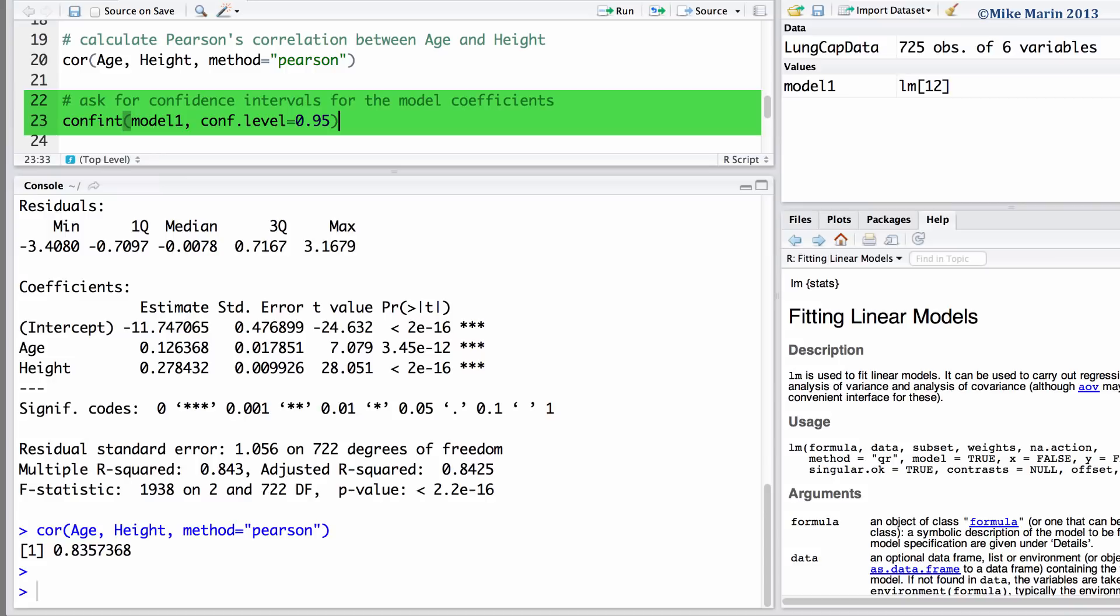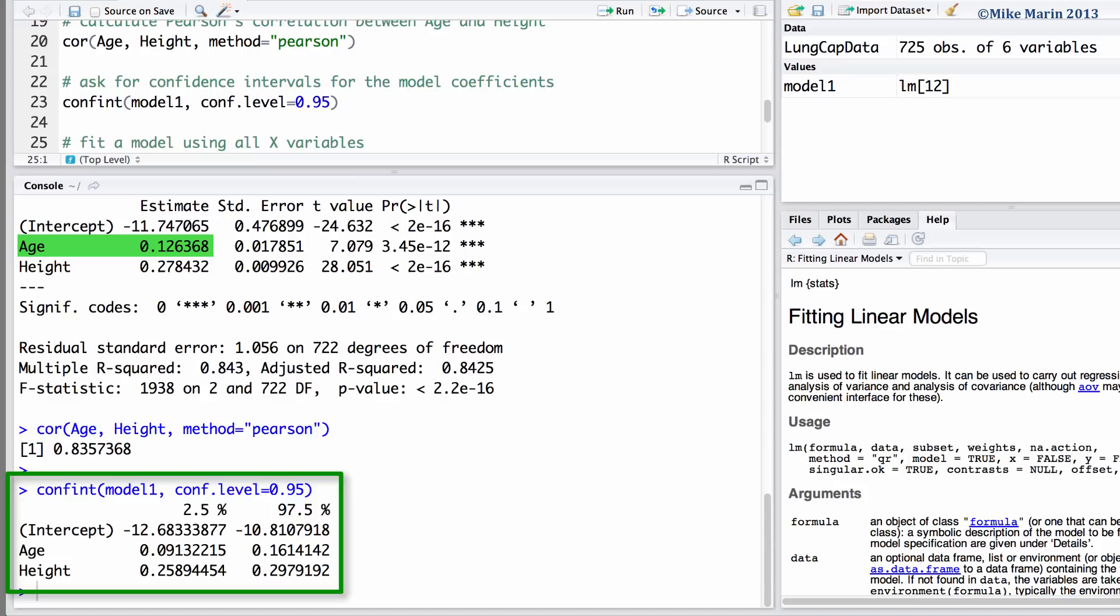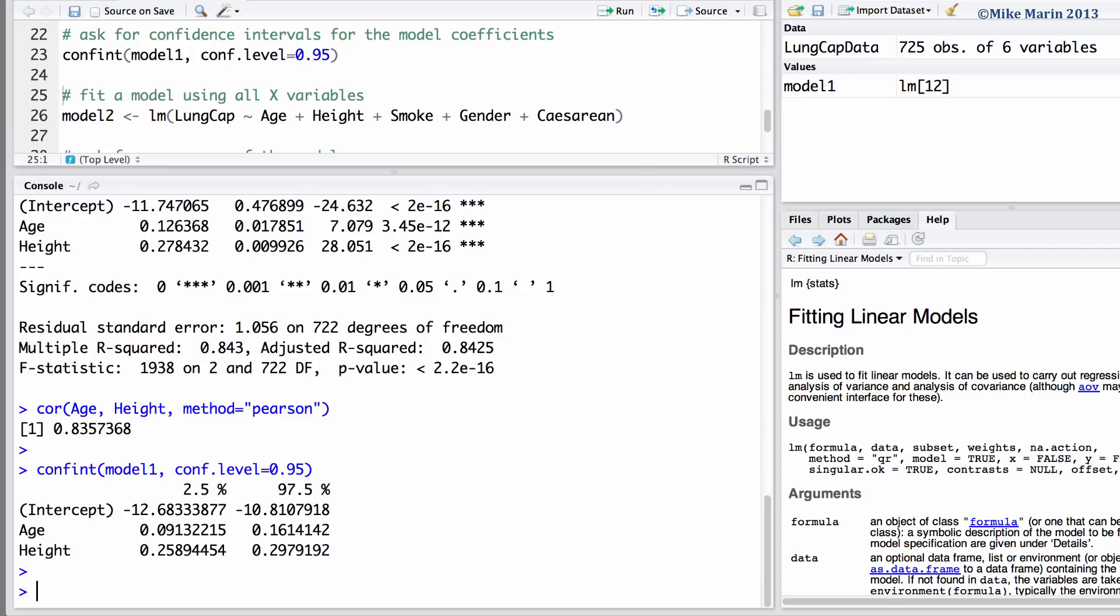And finally, as we've seen in earlier videos, we can create a confidence interval for the model coefficients using the confint command. Let's go ahead and take a look at a confidence interval for our model coefficients. We have an estimated slope for age of 0.126, where 95% confident the true slope is between 0.09 and 0.16.